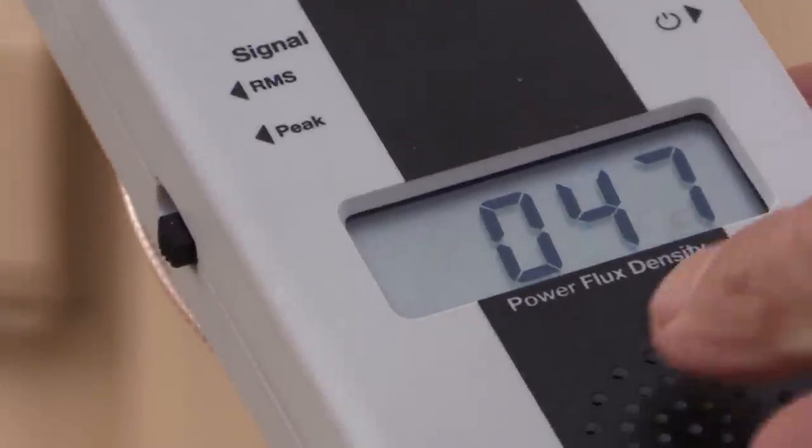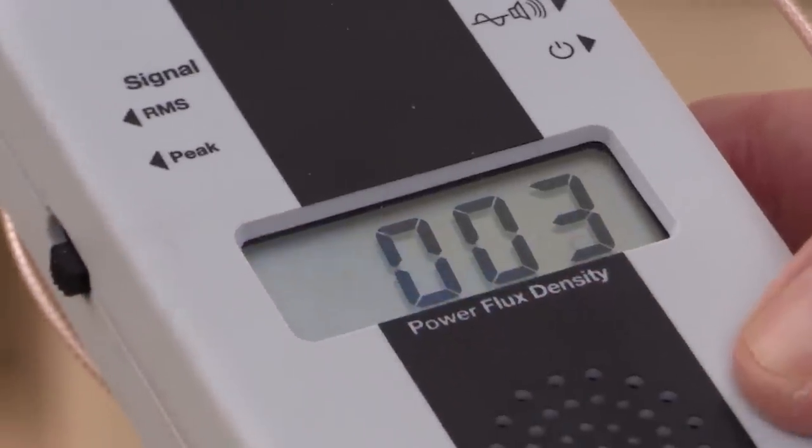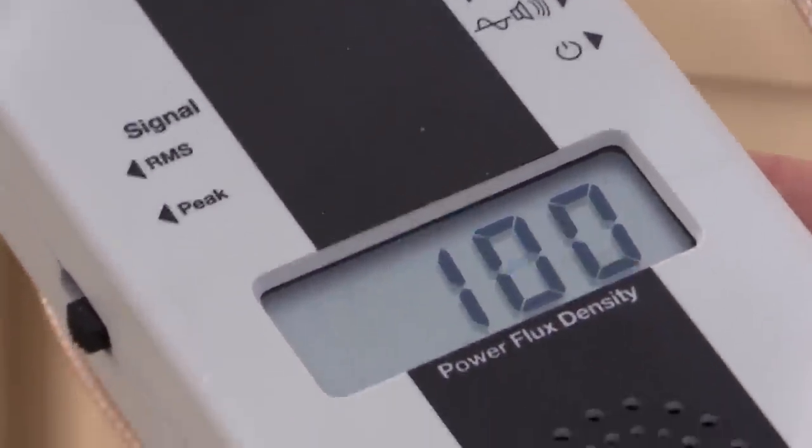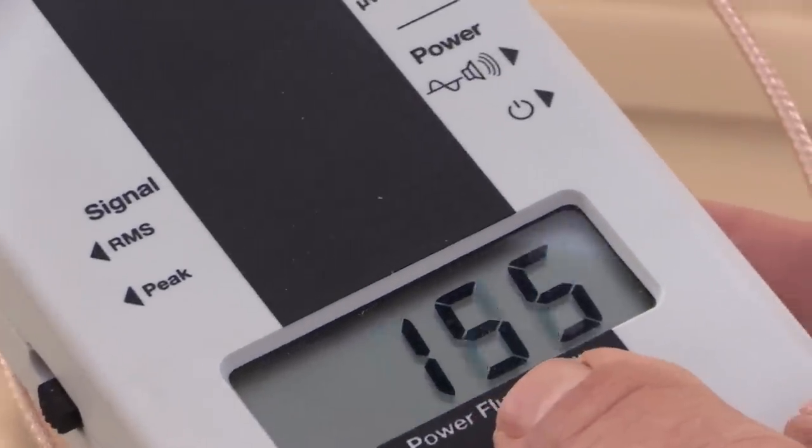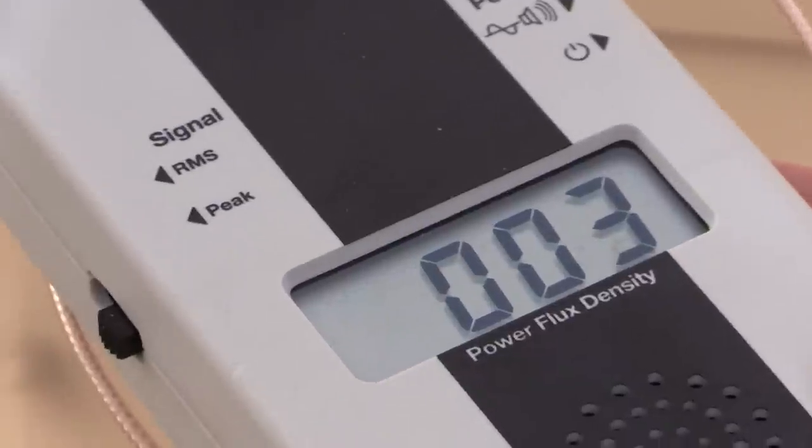That was over 300, which means that it was over 30,000 microwatts per meter squared. That one was up around 293, that spike. These smart meters go in bursts.